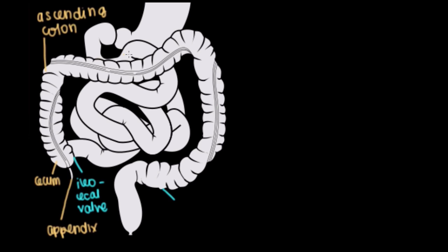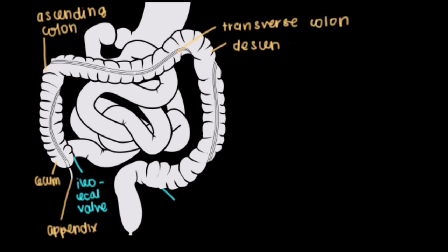Then we run transversely. The part of the large intestine that continues on after the ascending colon is called the transverse colon — another great name that describes how it runs, because it runs transversely. Next we get into the descending colon.